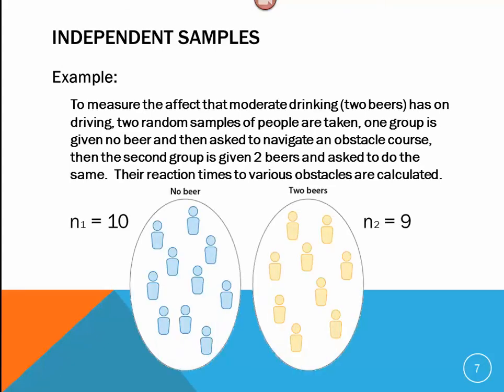So, in this case, we have two very different groups. In this group, you can see we have 10 people and in this group, we have 9 people. So, they don't even have to have the same sample size. This group of people is given no beer. This is given two beers. So, that's our categorical division between the two groups. And we want to see whether this division of alcohol intake has an effect upon their reaction times to the obstacles. So, two different groups of people randomly selected and independent of each other.